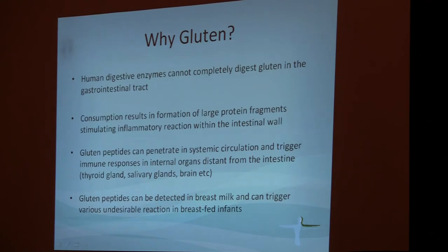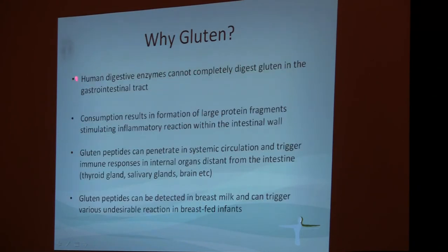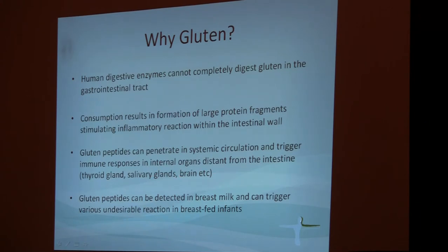Why gluten specifically? Why not some other proteins? There's a reason for that. The human body, in general, cannot digest gluten — our body doesn't have the necessary enzymes. So when we consume gluten, digestion results in large fragments. These fragments stimulate various inflammatory processes in the intestinal wall. It's been shown that these fragments can penetrate into the bloodstream and cause inflammation in distant organs, including the thyroid gland, adrenal gland, brain, joints, and so on.